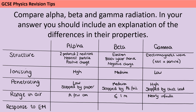Remember that gamma radiation is reaching us from the sun — obviously there's a vacuum rather than air, but it's managing to make it through the whole of the Earth's atmosphere. If you talked about the response to an electromagnetic field, alpha particles are going to be strongly deflected in one direction, beta particles are slightly less deflected in the opposite direction, and gamma radiation doesn't respond to that field at all.